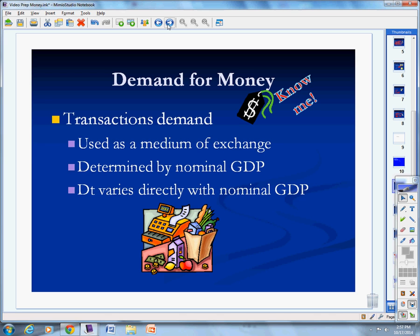All of that money I need for transactions I can't take and invest or do something else with it. I need it there and available. The demand for transactions varies directly with nominal GDP. In other words, what's happened to the demand for money for transactions as GDP has grown? It's also grown. So the primary mover of the demand for money for transactions is changes in GDP.